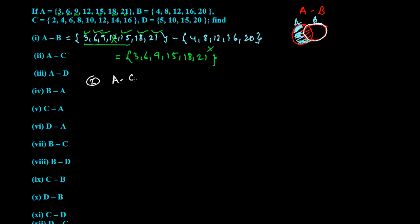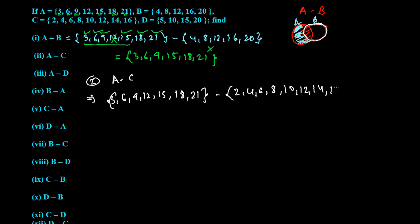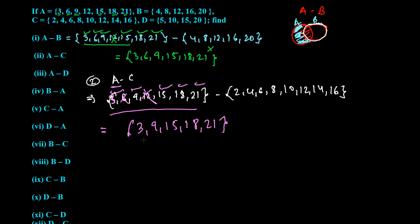The second question is A difference C — found in A but not in C. A is {3, 6, 9, 12, 15, 18, 21} and C is {2, 4, 6, 8, 10, 12, 14, 16}. Let's find those numbers which are in A but not in C. 3 is in A but not in C — take it. 6 is in C — cannot take it. 9 is not in C — take it. 12 is in C — skip. 15 is not in C, 18 is not, 21 is not. So the answer is {3, 9, 15, 18, 21}. If you draw the Venn diagram, it looks like this.